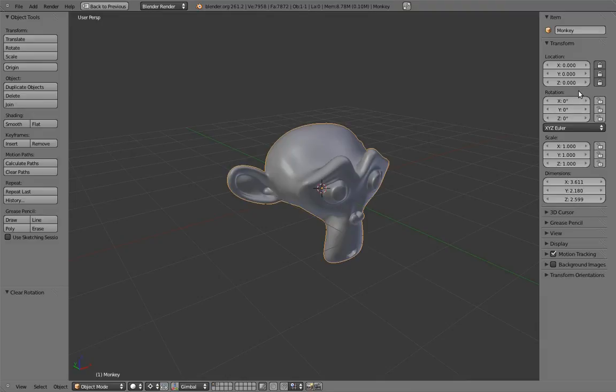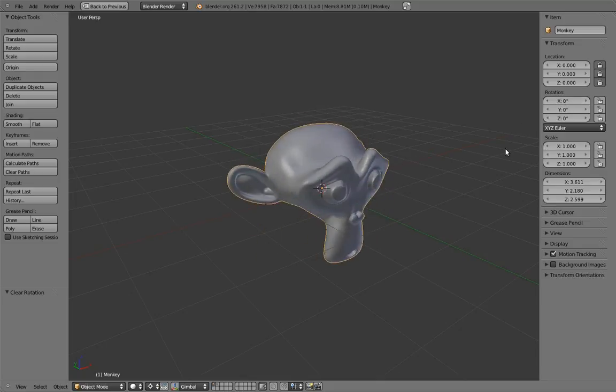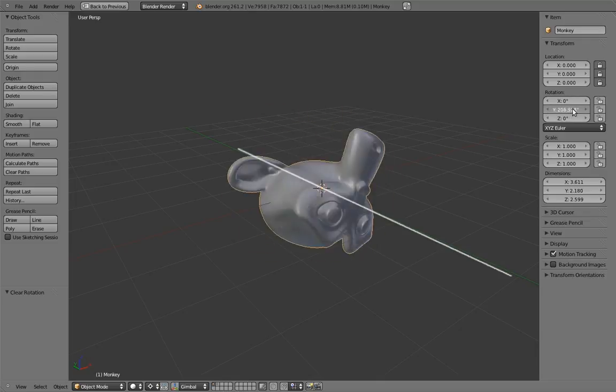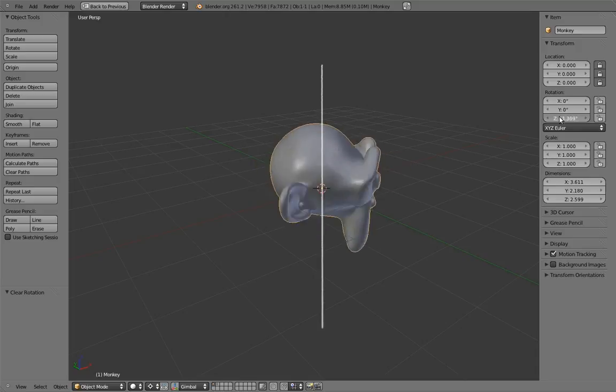In the end panel, we can see the three angles for rotating around each of the three axes. If we play with the x value, the monkey head rotates around the x-axis. Likewise, if we play around with the y value, the monkey head rotates around the y-axis. And the same with the z value and the z-axis.